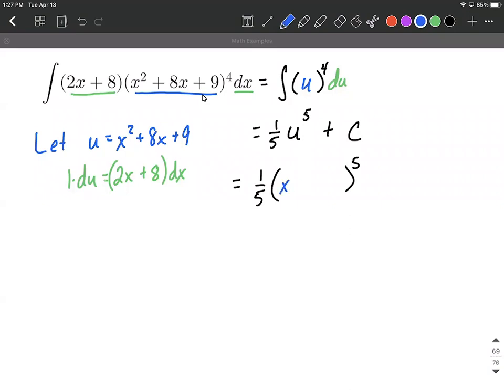So in u's place we can put x squared plus 8x plus 9, and then don't forget the plus C at the end because this is an indefinite integral. All right, I hope this helps out as you're learning about integrating and using u substitution. Good luck!